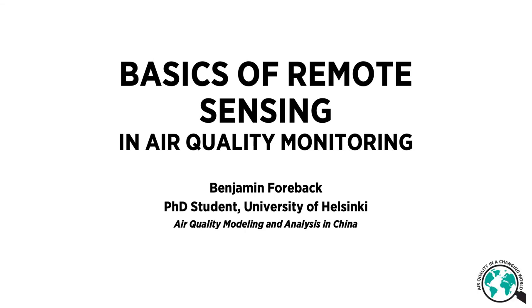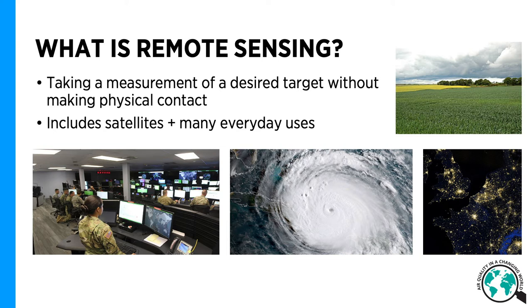So let's start with the very basics. What is remote sensing? The definition of remote sensing is taking a measurement of a desired target without making physical contact of the object. In general, remote sensing refers to satellites, but it actually can mean any everyday uses, and there are lots of uses that we will go over in a little bit.